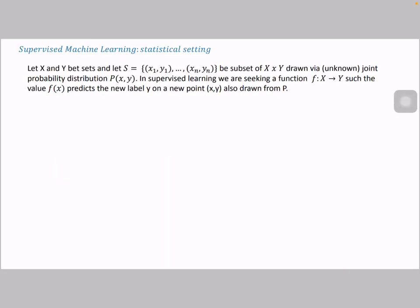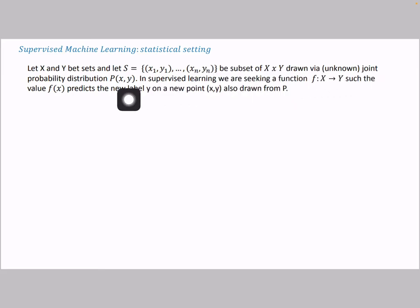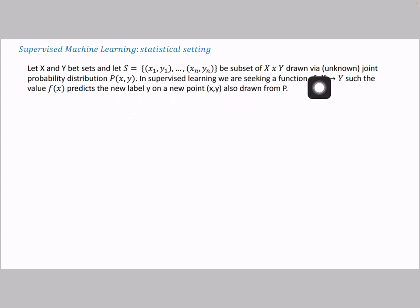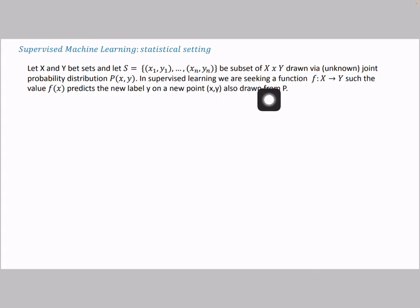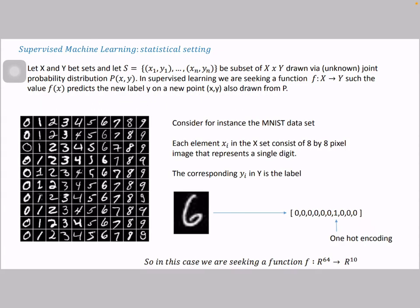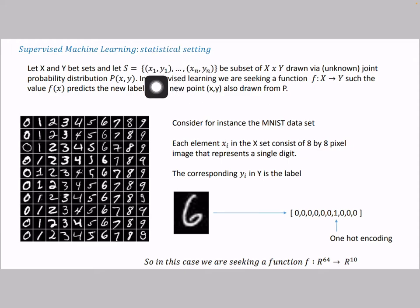I will start motivating this work by talking about supervised machine learning problems in the statistical setting. In a statistical setting, you are usually given a data set S that consists of pairs x_i and y_i, and this data set is usually sampled from an unknown joint probability distribution p(x,y). The problem is, after being given this data set S, to find a function f from the set X to the set Y such that f predicts the correct label y for a new point sampled from the same probability distribution p.